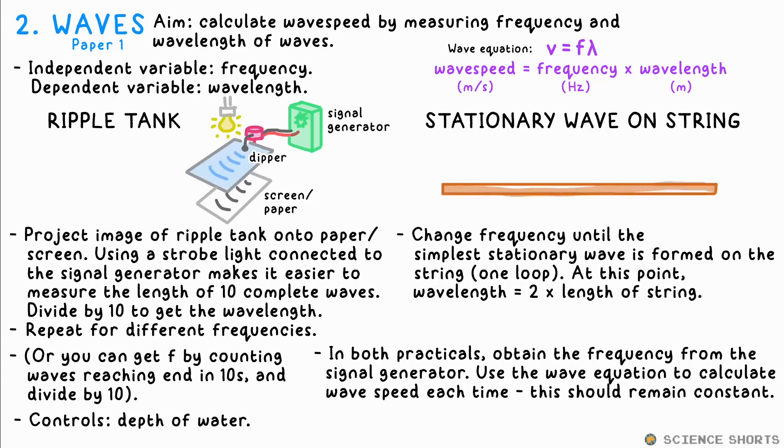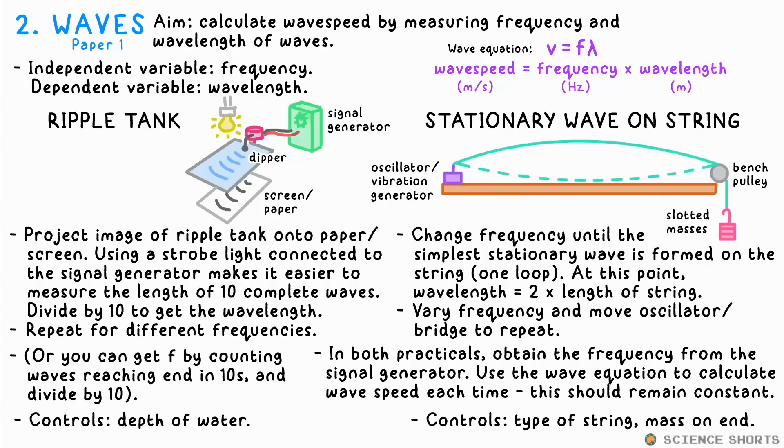The other prac involves getting an oscillator, aka a vibration generator, to produce a stationary wave on a string with masses on the end over a pulley to provide some tension. We might also use a bridge instead. You need to vary the frequency until you get the simplest stationary wave formed on the string one loop. At this point, the length of the string to the pulley or the bridge is equal to half the wavelength of the wave. Using this with the frequency driving the oscillator, we can again calculate wave speed.